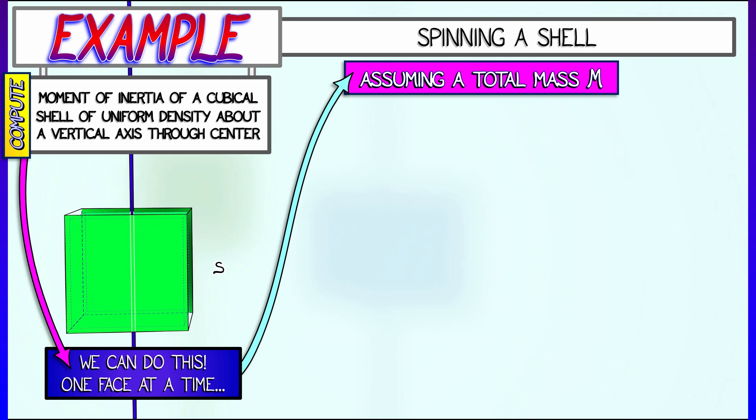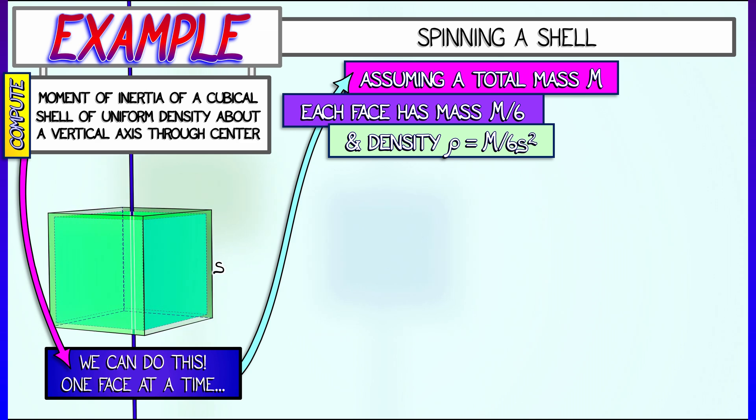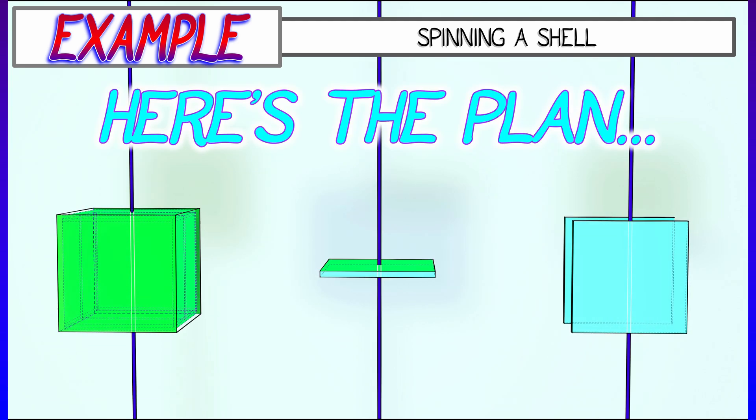Each face has mass equal to m over 6. Since the density is constant, this means we can solve for the density, ρ, as m divided by 6s squared - that is, total mass divided by the total area.